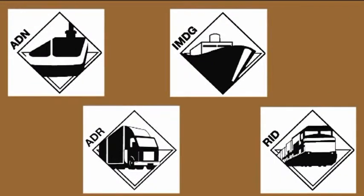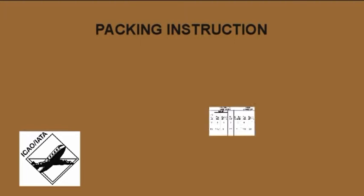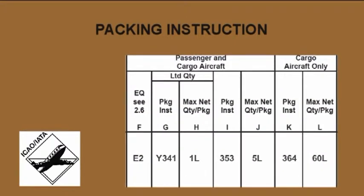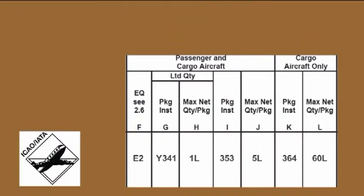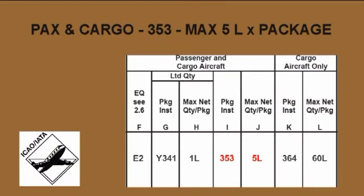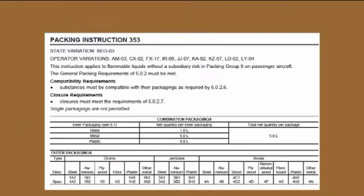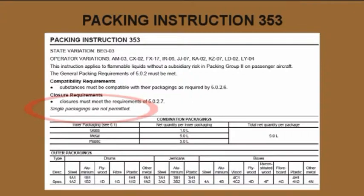The way to proceed is equivalent for all modes of transport. First of all, we have to choose the packing instruction based on the amount to be shipped. We select the 353, which is valid for both passenger and cargo aircraft and permits us to use one package only. Packing instruction 353 does not allow single packaging, so we have to use a combination packaging.